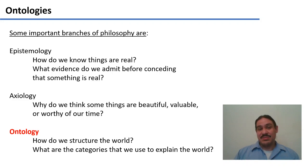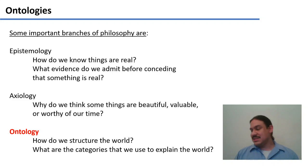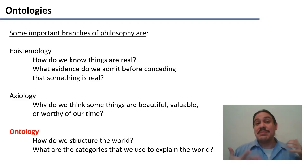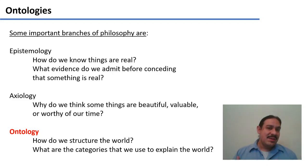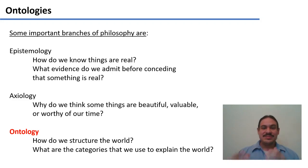There's also the branch of axiology — how do we decide that something is beautiful, valuable, or worthy of our time? Why do we think some opera is worthy but a popular song is not? Who makes those decisions and how? Here, though, we're going to focus on ontology: how do we structure the world and what kind of categories do we use to explain it?